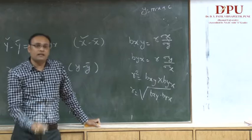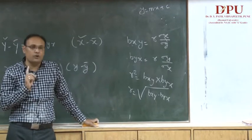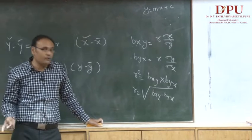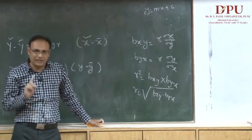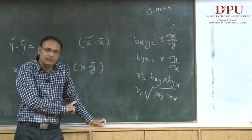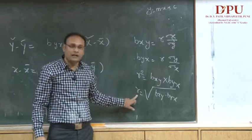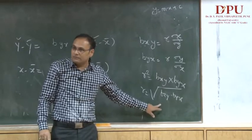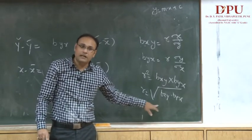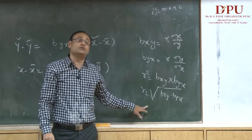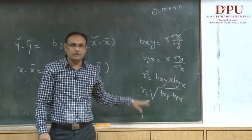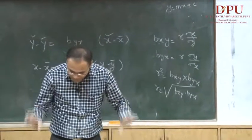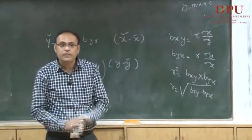So sometimes if the regression coefficient of x on y and regression coefficient of y on x are given, we can calculate the correlation coefficient r. Just multiply these two values and take the square root to get the correlation coefficient. These kinds of questions appear in your question paper.